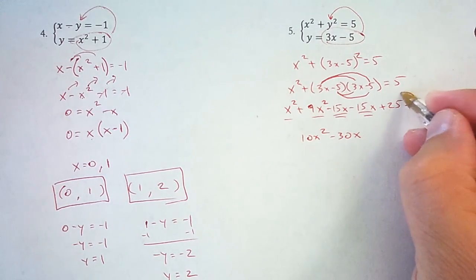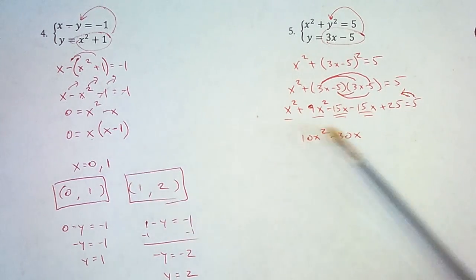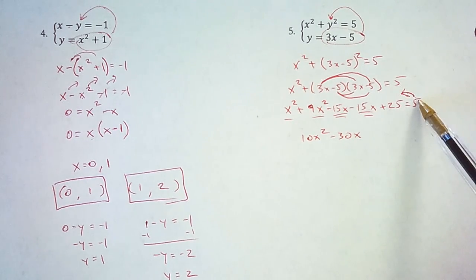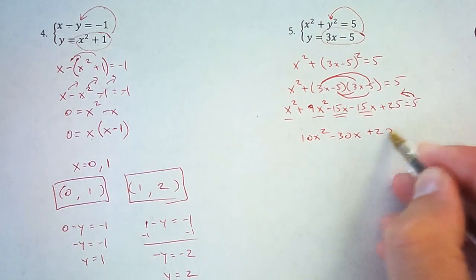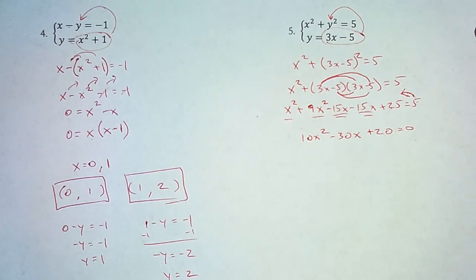Now you know what, let's just bring this over. Remember from this problem before, I said if I've got x squared and x, I like to get everything to one side. So let's subtract this 5. 25 minus 5 is 20 equals 0.